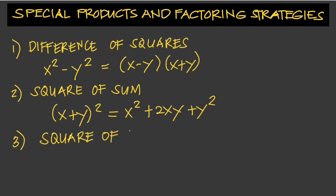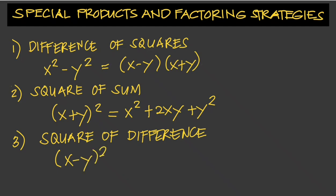The third one is the square of difference, which can be written as x minus y squared, equals x squared minus 2xy plus y squared.